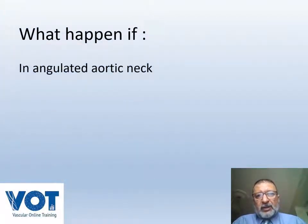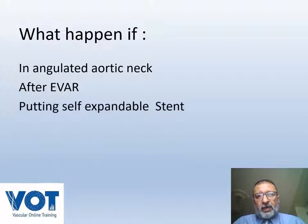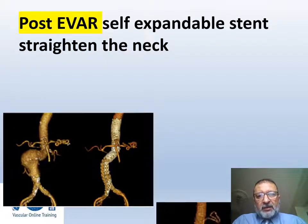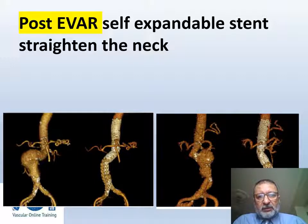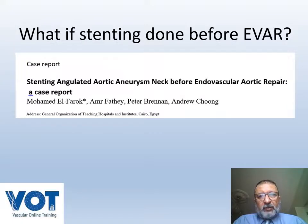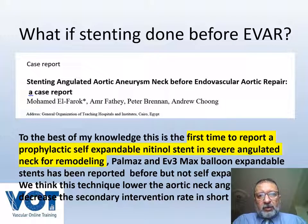So the question is: what happens if we put a stent in an angulated neck before we place the EVAR device — will this help us manage a severely angulated neck? Here is a nice demonstration of the effect of a stent in an angulated neck. When you have a severe angulation and you place a stent, it straightens the angulation. This is confirmed by multiple before-and-after EVAR cases. My idea was: what if we put a stent before deploying the EVAR?